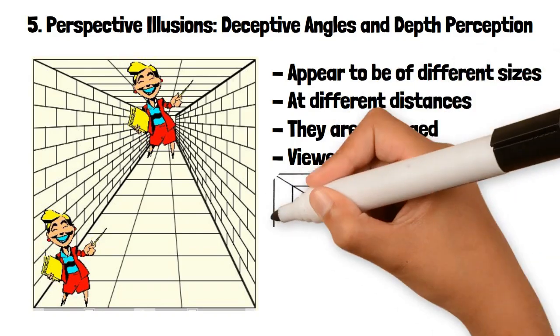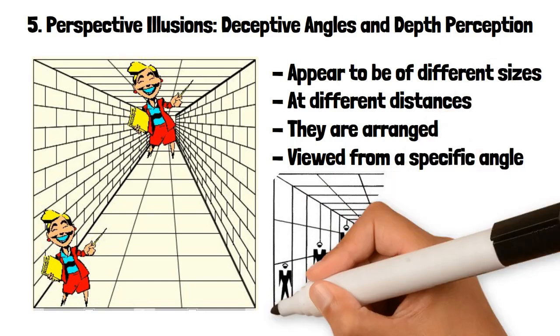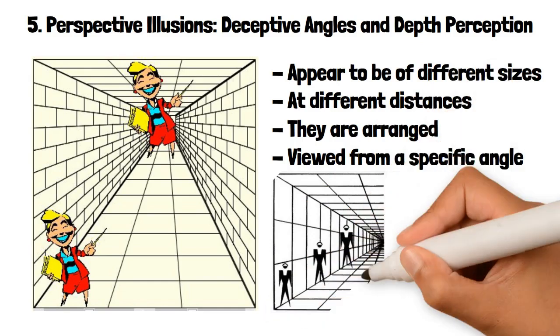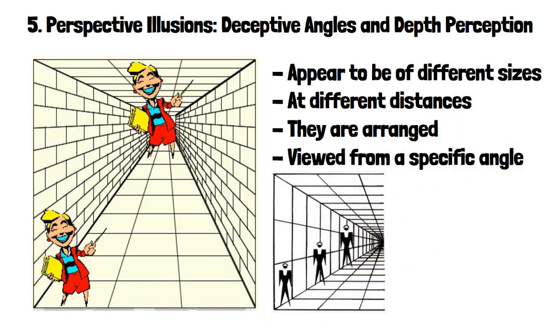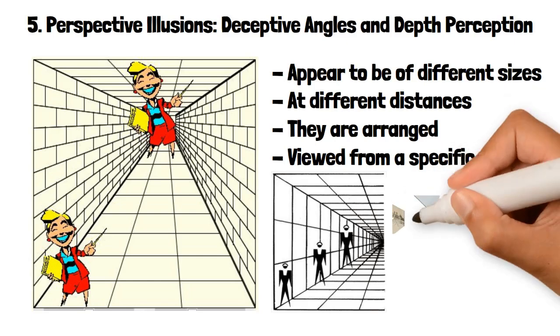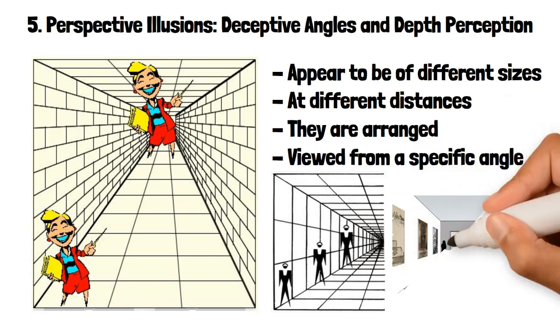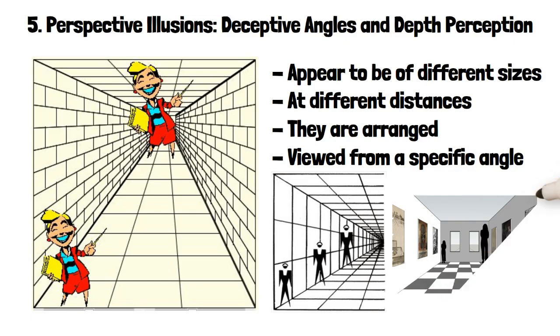A well-known example is the Ames Room, a specially constructed room where people appear to change size as they move from one corner to another. This effect is achieved by distorting the room's shape while maintaining the appearance of a regular rectangular room when viewed from a specific vantage point.